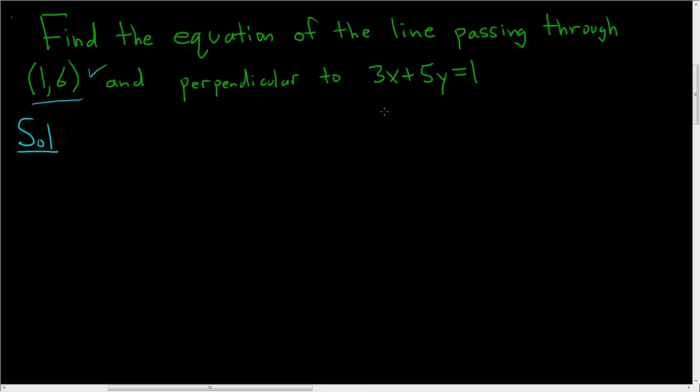Our line is perpendicular to this line. So the slope of our line is the negative reciprocal of the slope of this line. We first have to find the slope of this line and to do that we have to solve for y.